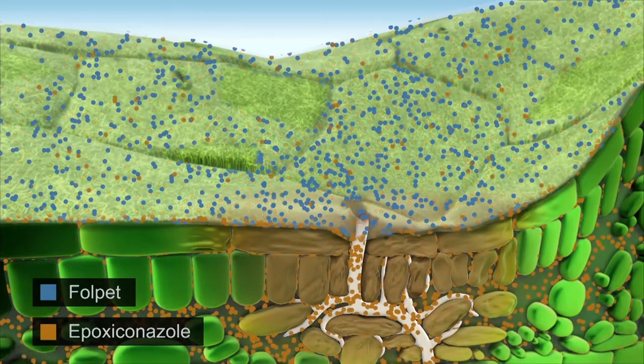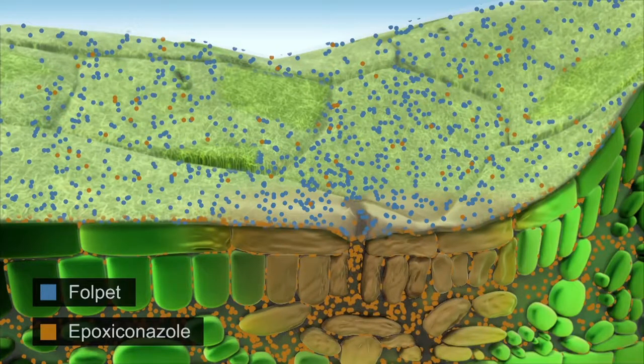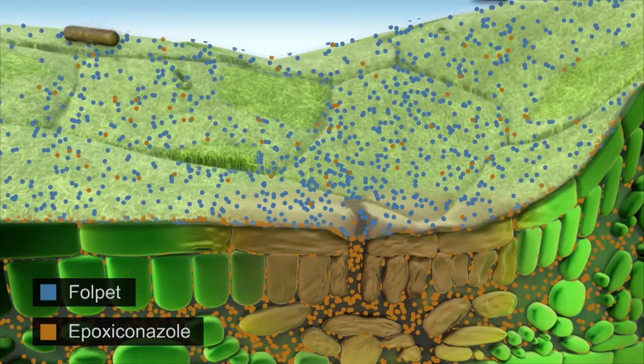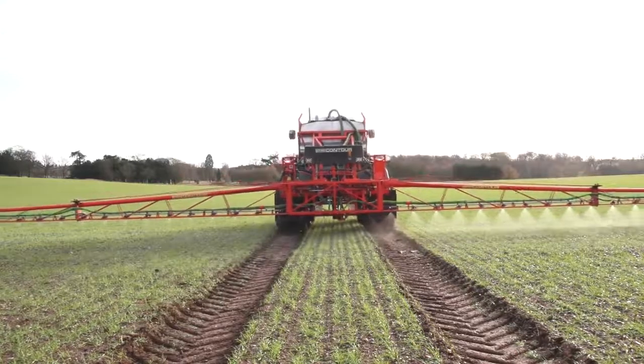Folpet doesn't inhibit partner product uptake but instead optimizes the efficacy of the curative partner chemistry which maintains its activity, allowing systemic movement into the new plant growth.